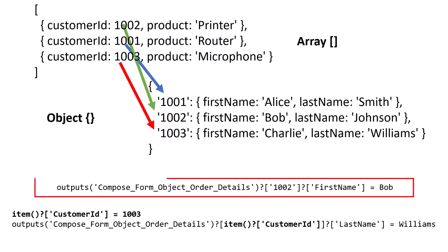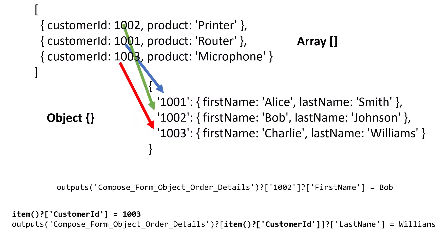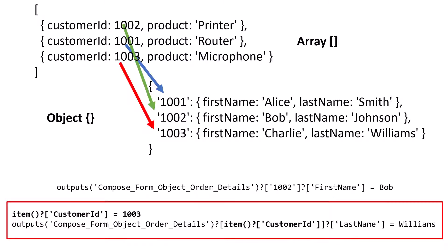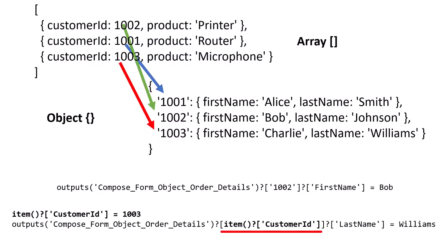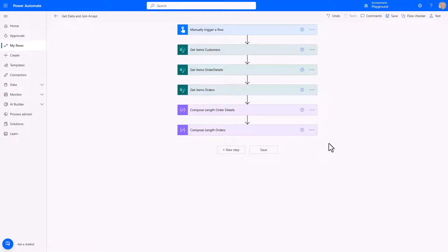If the object is in a compose called 'customer object', we can query the key 1002 using an expression followed by the property name to return, for example, 'Bob'. If item customer ID is dynamic, say 1003, we replace the fixed key with the expression `item()['customerID']` to dynamically retrieve values — for instance, last name returning 'Williams'. This trick repurposes data from the customers array and order details into an object that can be queried dynamically and efficiently.